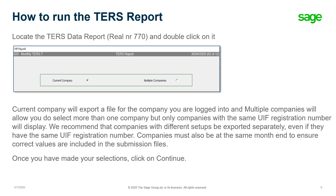Locate the TERS data report, which is report number 770, and double click on it to open. You will see that the report gives you the option to either run it for the current company — which will be the company that you are logged into — or to run the report for multiple companies.